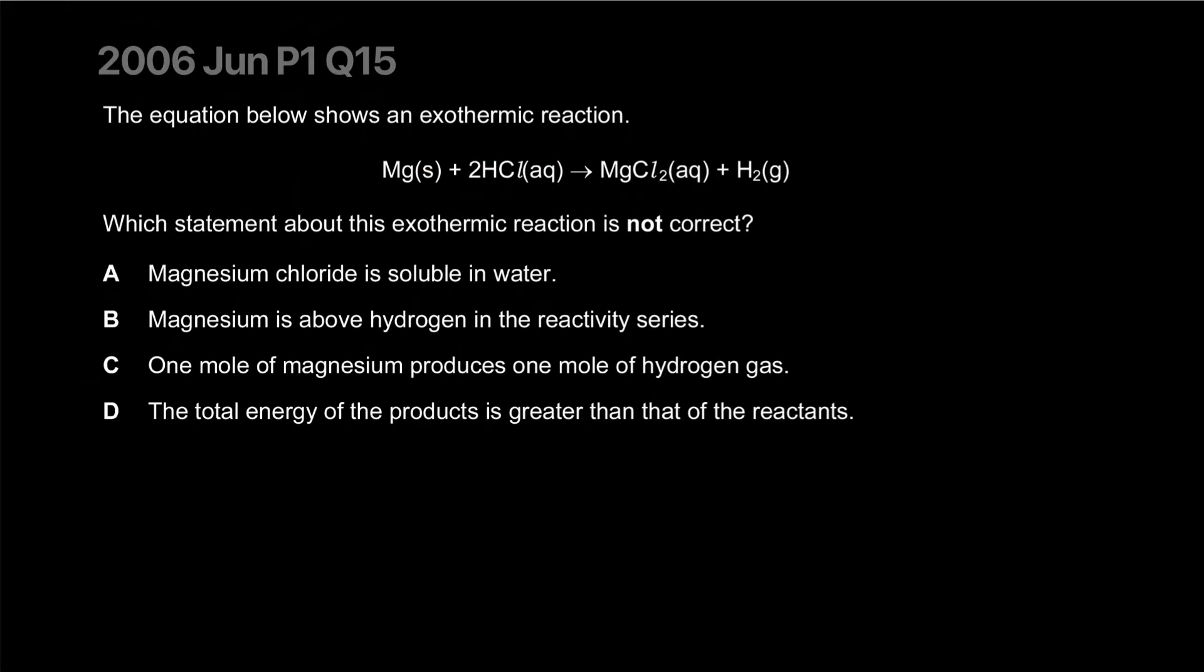The equation below shows an exothermic reaction. Which statement about this exothermic reaction is not correct? I anticipate hearing about bonds breaking minus bonds forming. Magnesium chloride is soluble in water - it says aqueous in the name, so that's correct. Magnesium is above hydrogen in the reactivity series, that's also true. It's actually the third or fourth one, fourth in our reactivity series. One mole of magnesium produces one mole of hydrogen gas, that's also true, one to one.